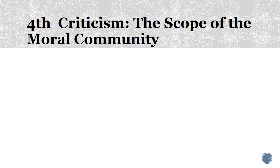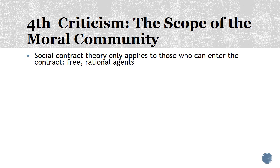Finally, the last criticism of contract theory as a perspective on morality and justice is, again, the scope of the moral community — much as we saw with Kant, we're going to see a very similar problem arise here. Social contract theory would only apply to those who can actually enter the contract — that is, free rational agents. There's a reason why people can't simply...